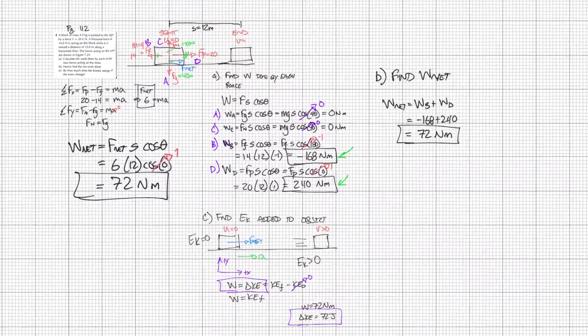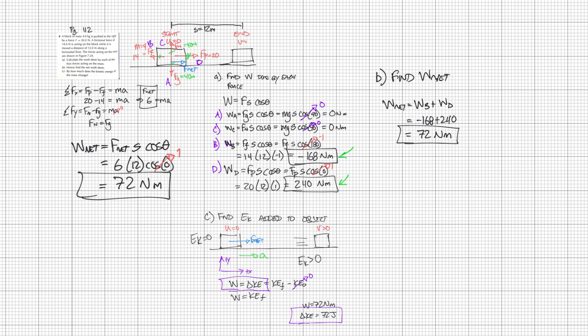That's a snapshot of all the work. It's a good question to see how we can find work done based on individual works or the net work, and then use that to understand how much energy changes. The energy increases by 72 joules because that's how much work was done throughout the system.